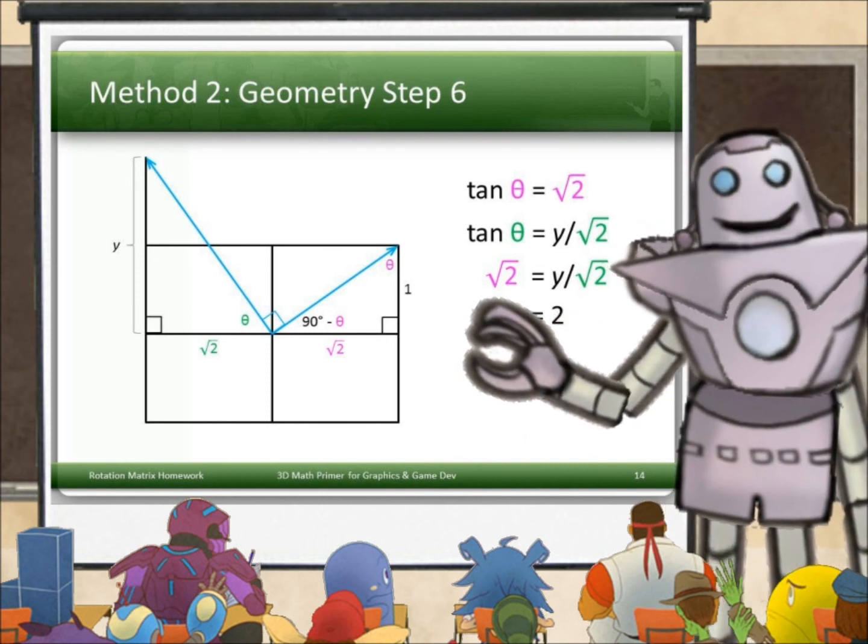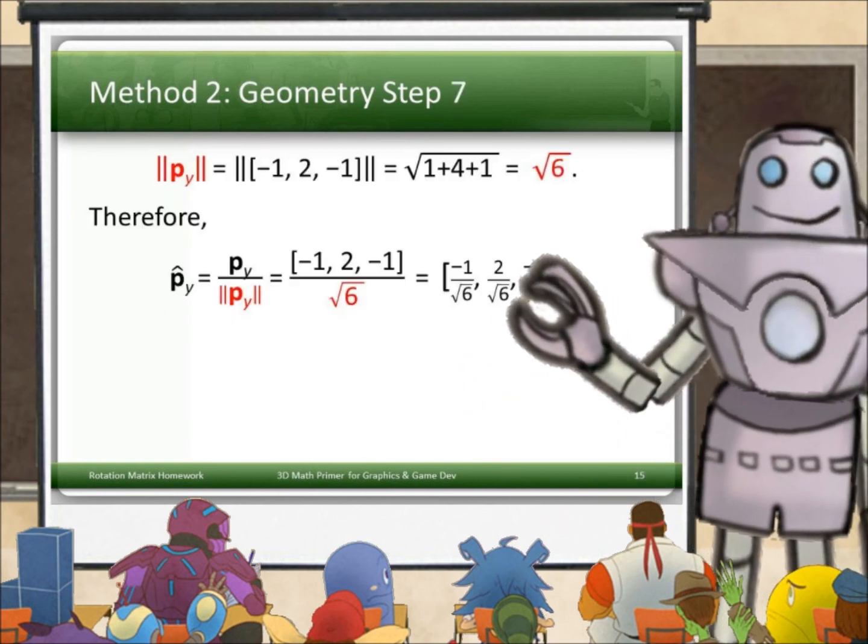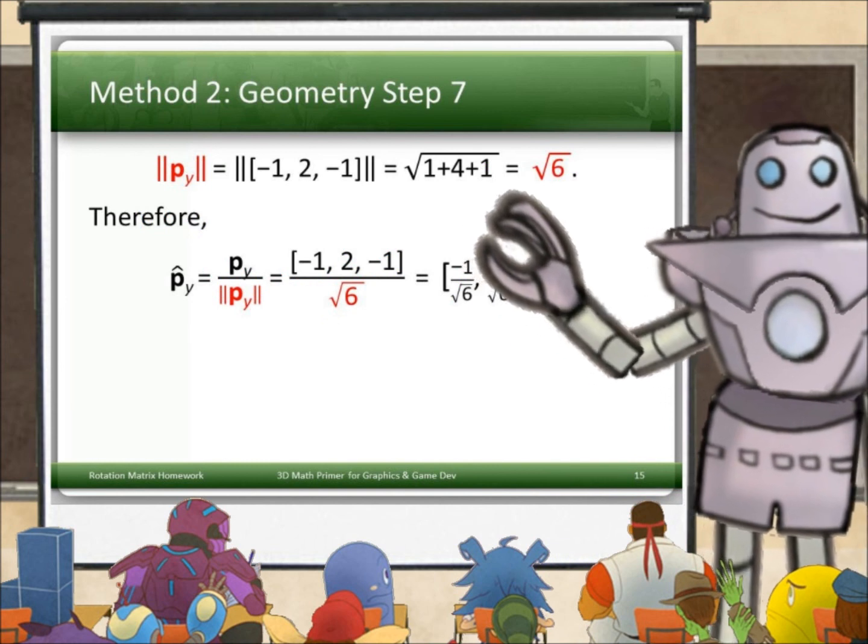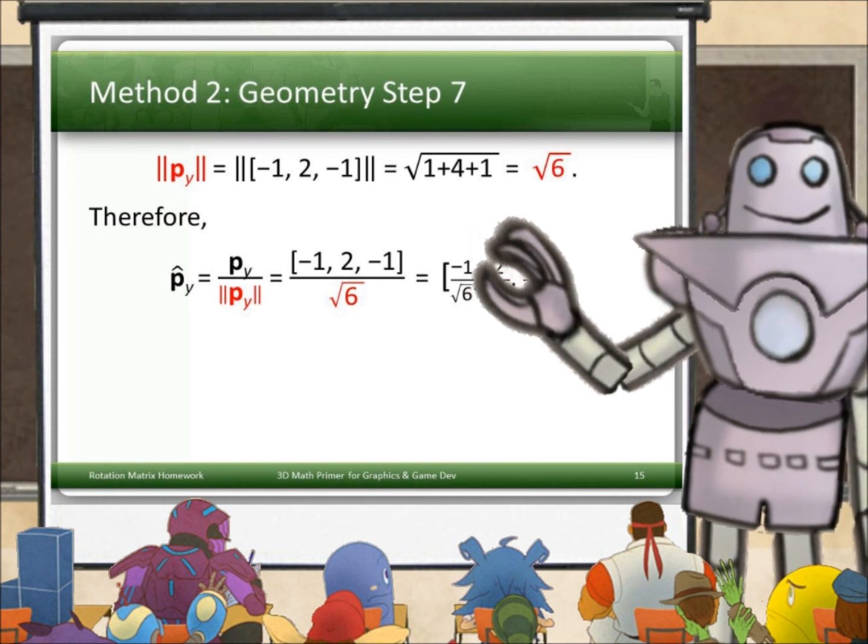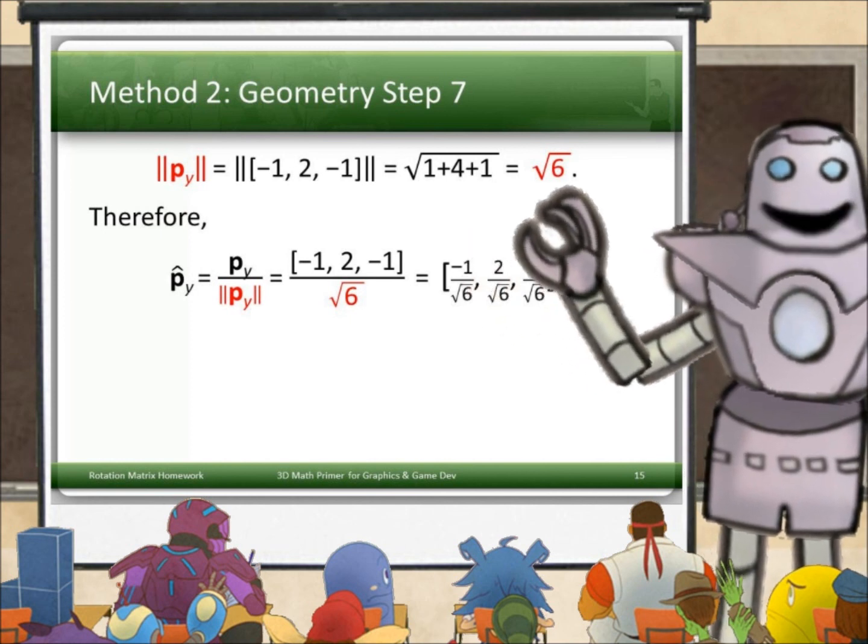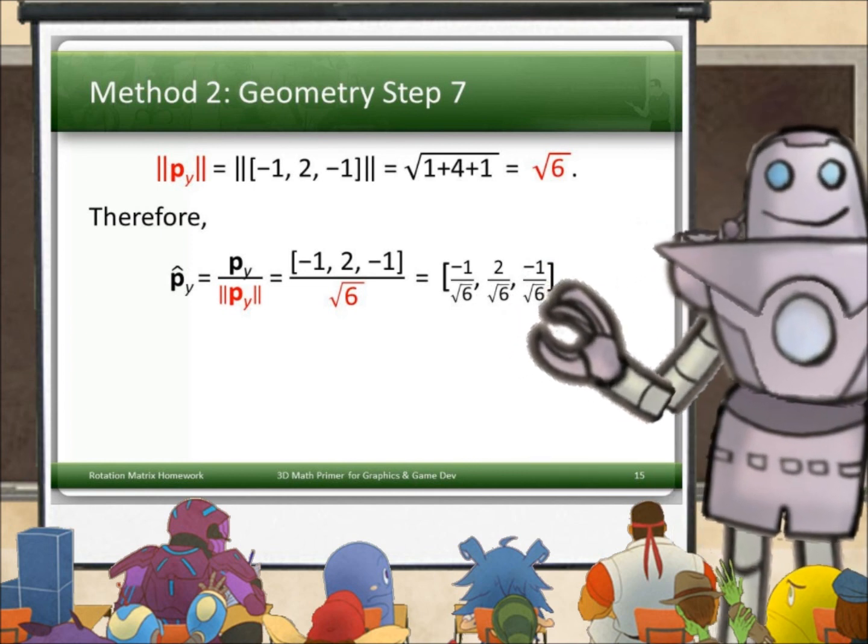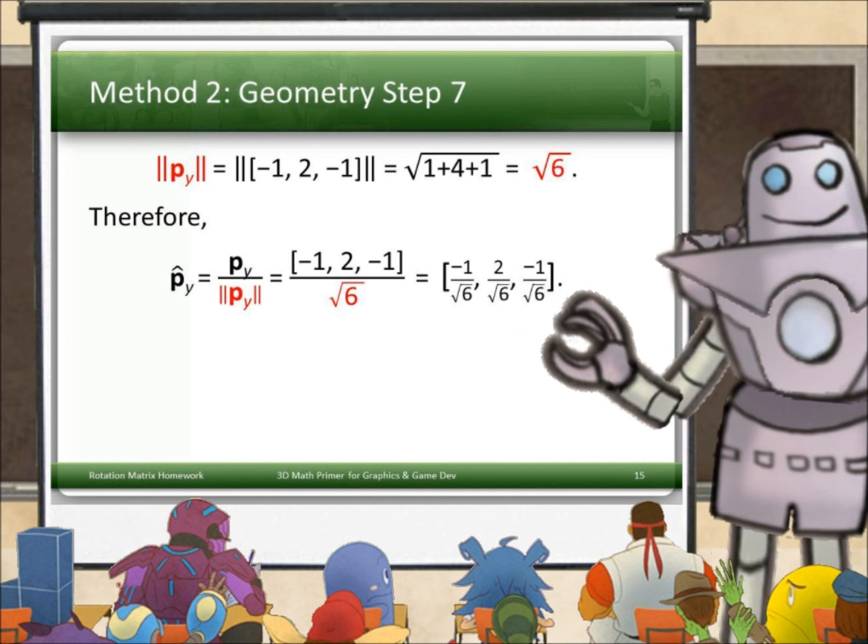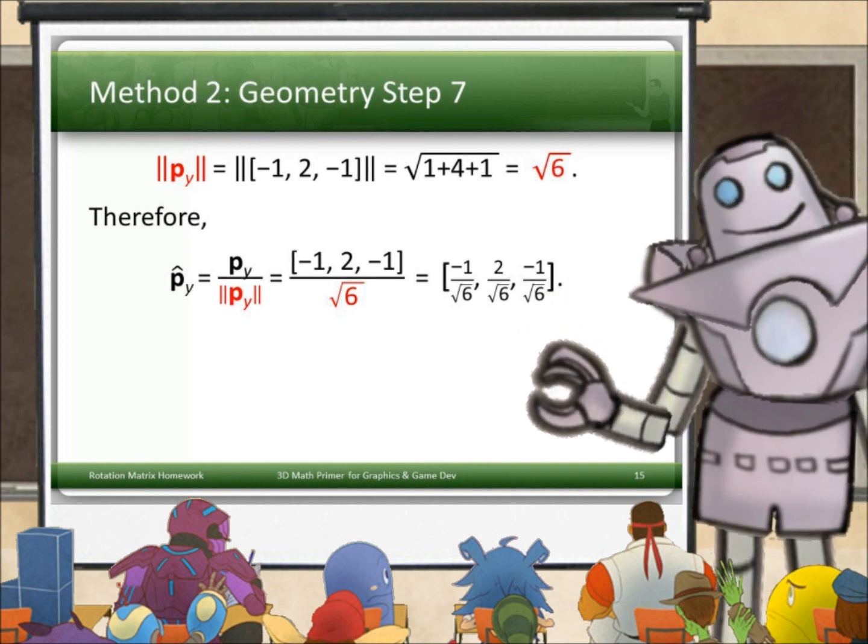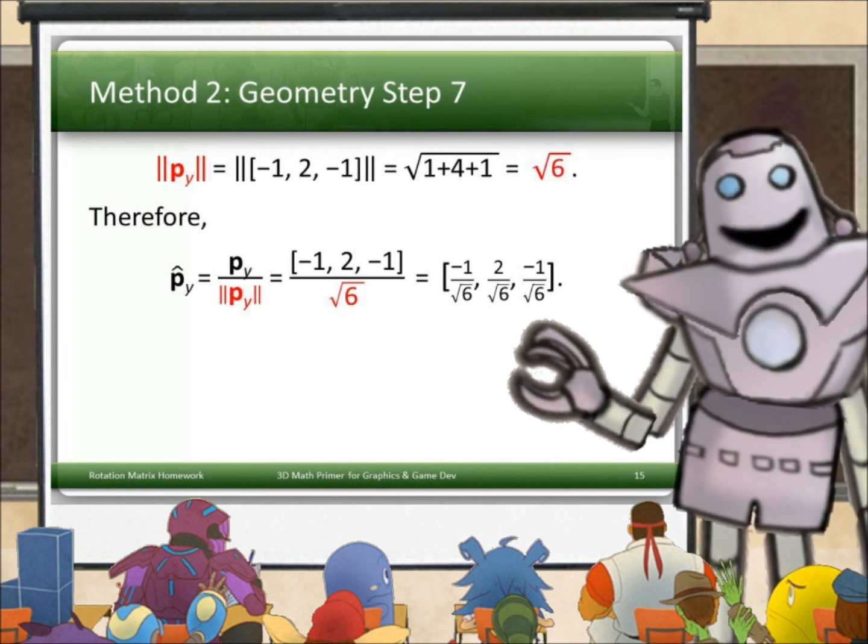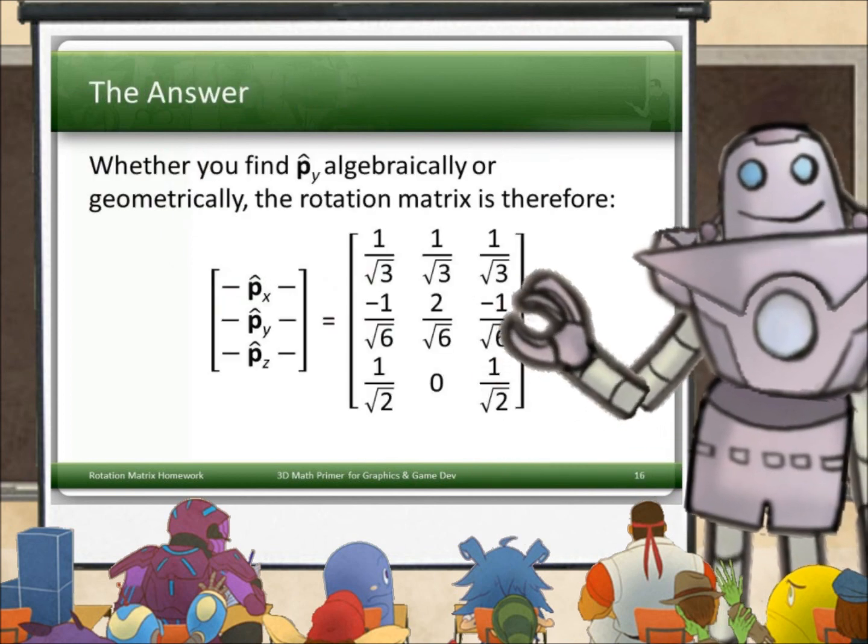Ah, good. That gives us a vector for p_y. So p_y is, as I said, (-1, 2, -1). We just found the two. Its norm is √6. So p_y hat, the normalized version, is (-1/√6, 2/√6, -1/√6), which is the same answer that we got when we used algebra. Fortuitously, it means I didn't make a mistake. Of course it's going to be the same. Now we're done.